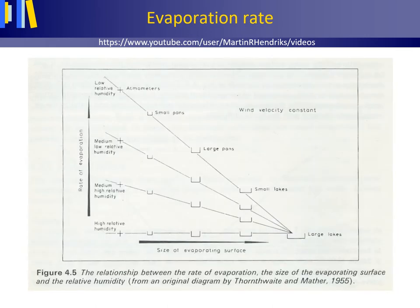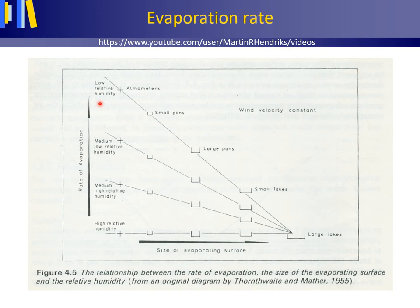This picture shows the rate of evaporation in millimeters per day on the vertical axis for a high relative humidity of the air above the water as opposed to a low relative humidity of the air above the water, as a function of the size of the evaporating surface — pans and lakes — representing open water evaporation. When the weather is warm and the relative humidity of the air is low, the difference between pan evaporation and open water evaporation will be larger than when the weather is cold and the relative humidity of the air is high.